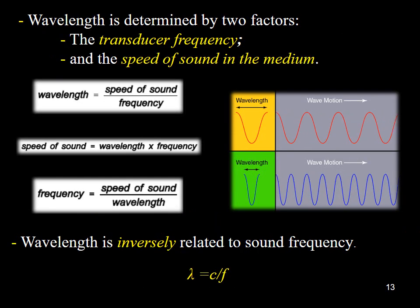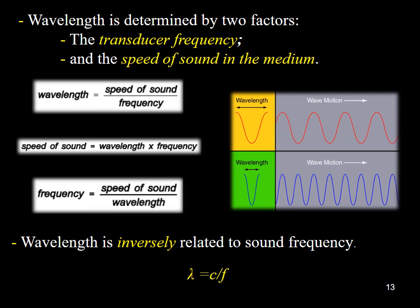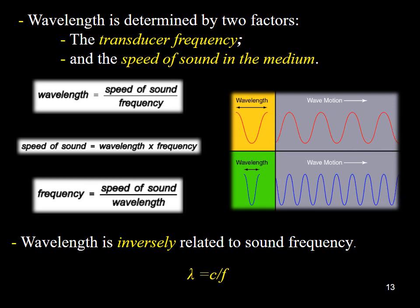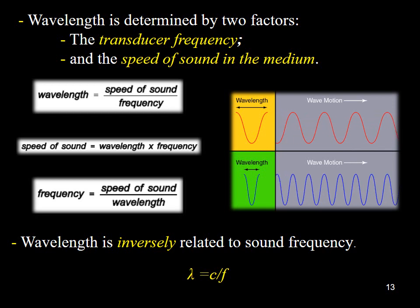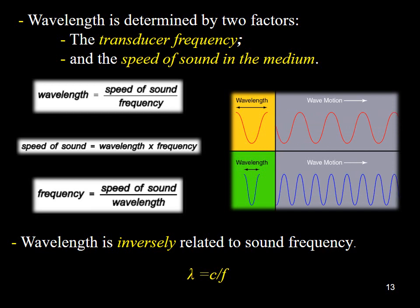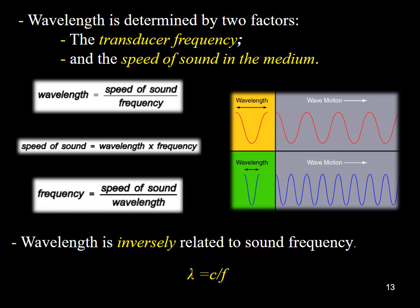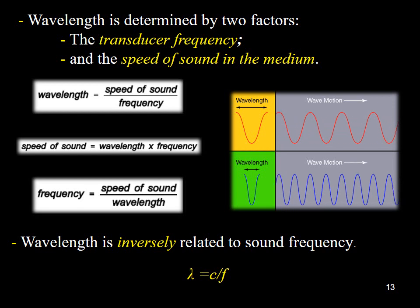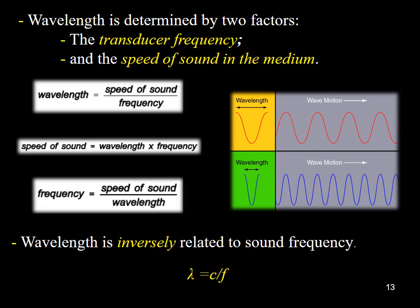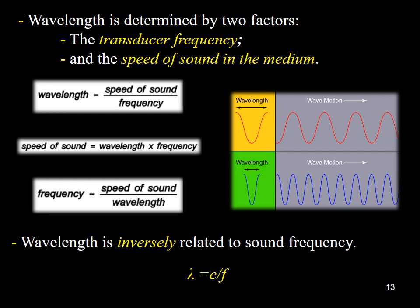Sound, like all waves, travels at a constant speed and has frequency and wavelength properties. The relationship between sound speed, frequency, and wavelength is the same as it is for all waves: the wavelength is equal to the sound speed divided by the frequency. The wavelength is determined by two factors: the frequency of the transducer and the speed of sound in the medium.